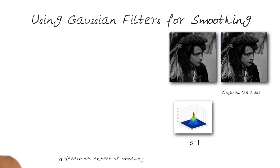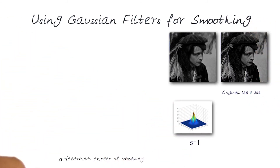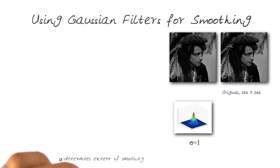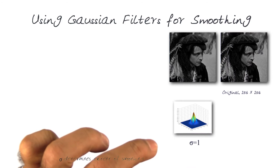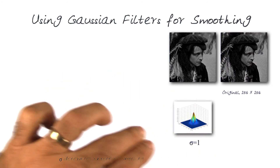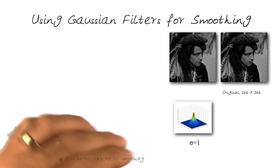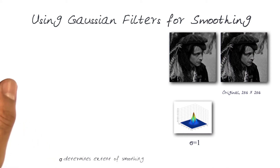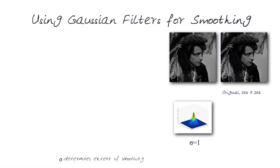Let's start off with the simplest one. Here I'm using a sigma of 1 — a pointed kernel that is round, and as you go away from the center it gets closer to zero values. The resulting image is blurred, but not extremely blurred. It's got a little bit of defocusing going on.